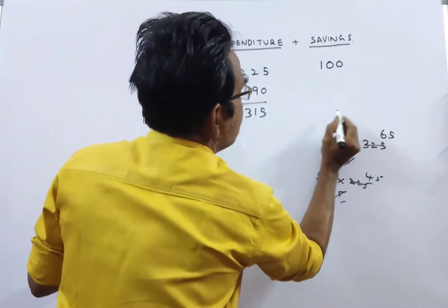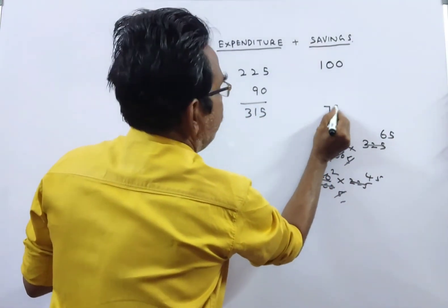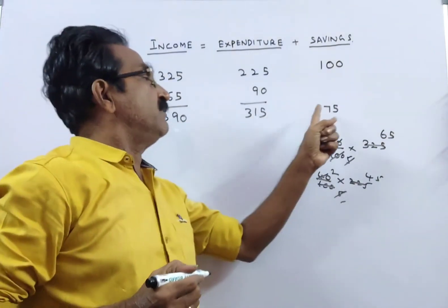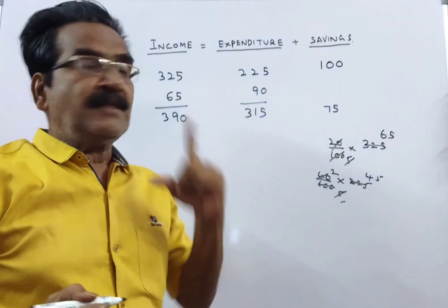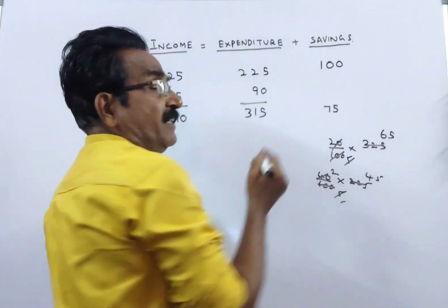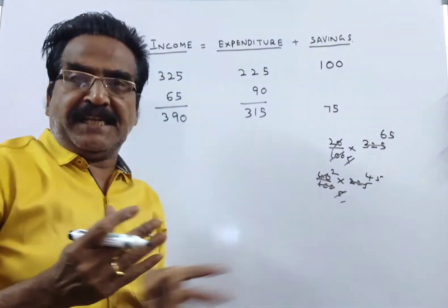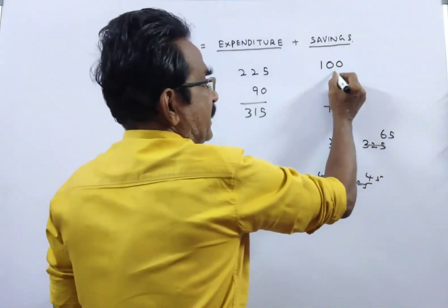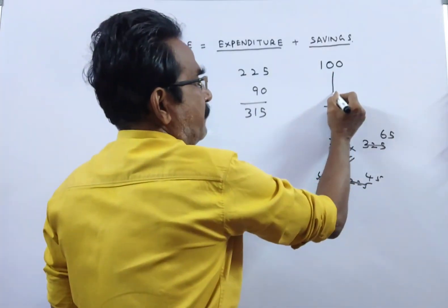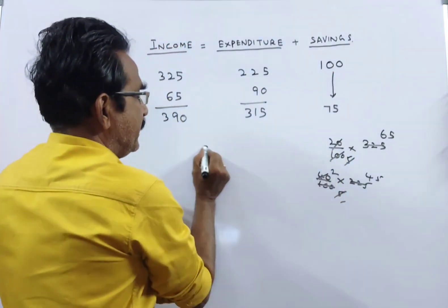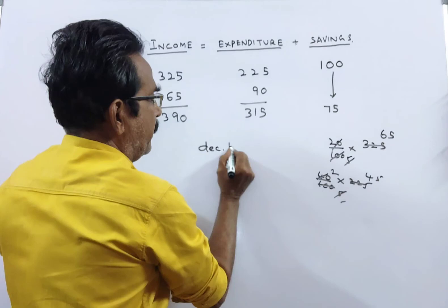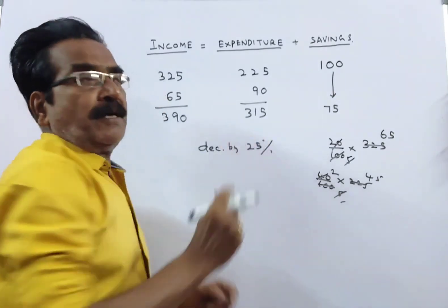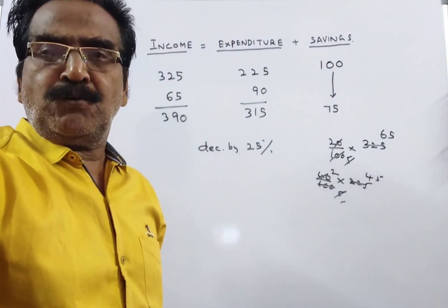So his savings become 75. That is 390 minus 315 equals 75. With these two changes, his savings decrease by 25%. This is your answer. Thank you.